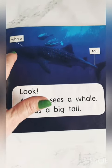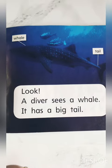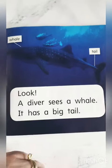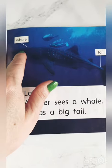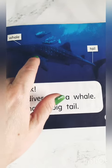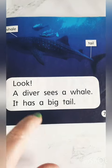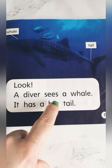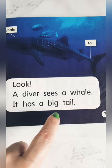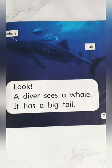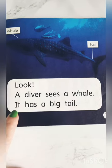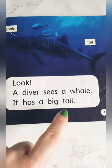So what is here? A whale. You know what's a whale? And it has a tail. A tail. Esa es la ballena. Y tiene una cola. Look. A diver sees a whale. It has a big tail. El buceador ve a una ballena. Y tiene una cola grande.